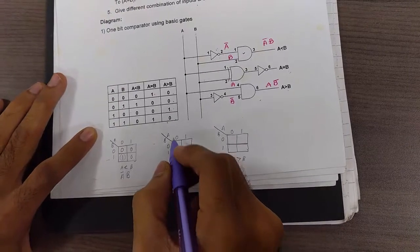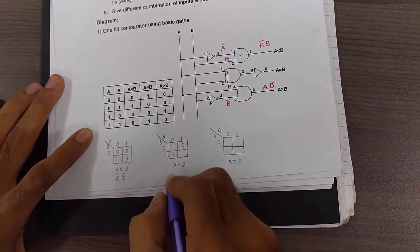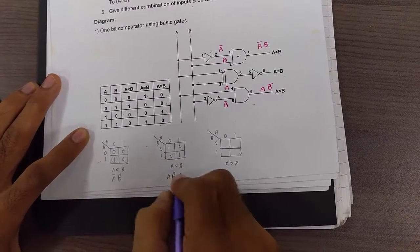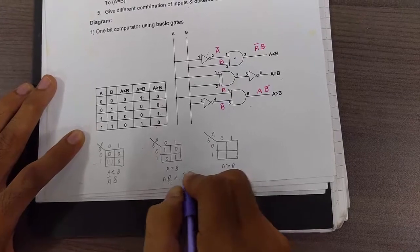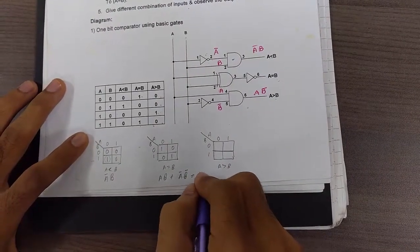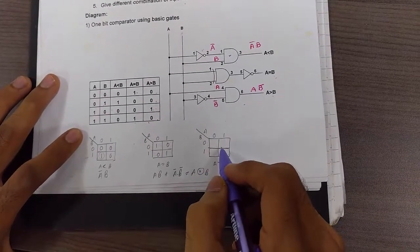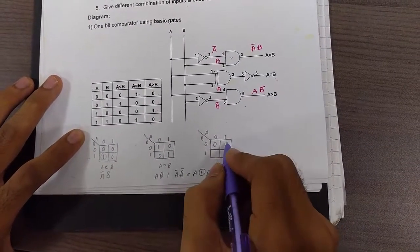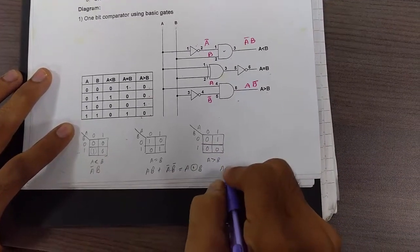Similarly, for A equal to B, you get the equation as A B plus A bar B bar. This is nothing but A XNOR B. Similarly, for A greater than B, we get A dot B bar.